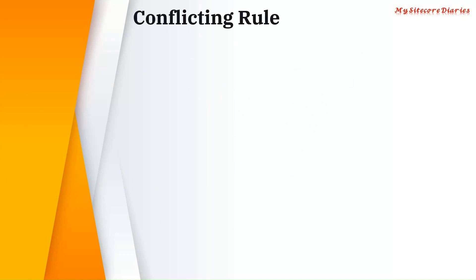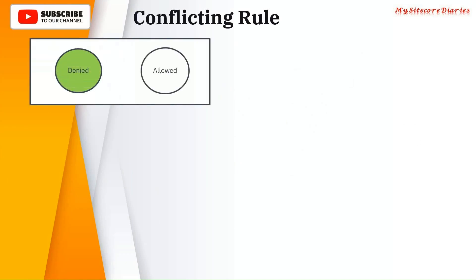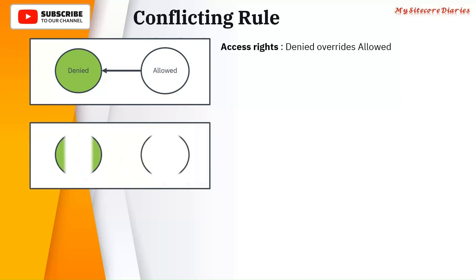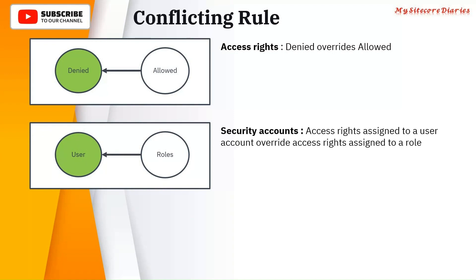Let's see conflicting rules. First is denied and allowed — between denied and allowed, denied always gets precedence. Access right denied overrides allowed. Then you have user and roles. In this case, user will get precedence. Security accounts access rights assigned to a user account override access rights assigned to a role.